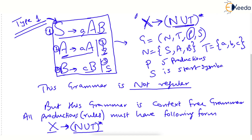Now observe the right-hand side of all the productions. The left-hand side is always a single non-terminal. But the right-hand side can be any combination of non-terminals and terminals. For example, here on the right-hand side you have a terminal and two non-terminals, or a terminal followed by a non-terminal. All productions can contain any combination of non-terminals and terminals on the right-hand side.